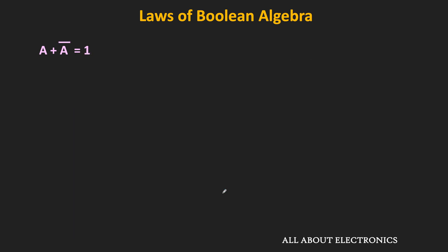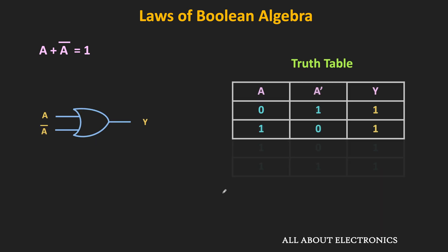The next law is a + ā = 1, meaning the OR operation of a with its complement is equal to 1. From the truth table where the second input equals ā: when a is 0, then ā is 1; and when a is 1, then ā is 0. In both cases, at least one input is 1. For the OR gate, when one of the inputs is 1 the output equals 1. Therefore in both cases y = 1, meaning a + ā = 1.